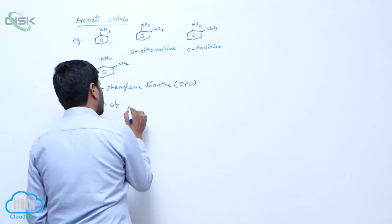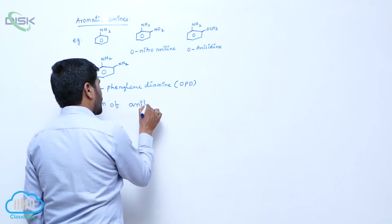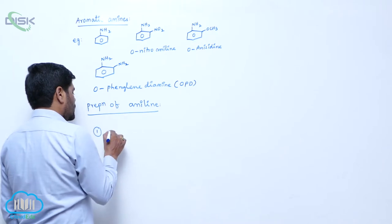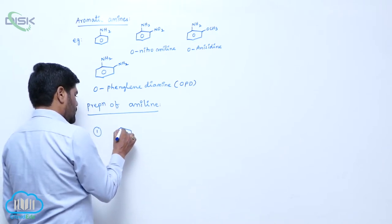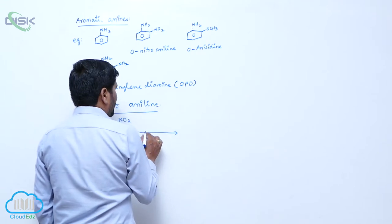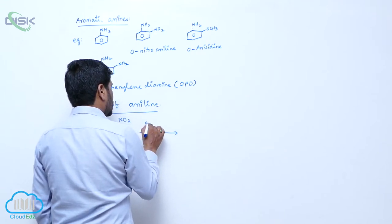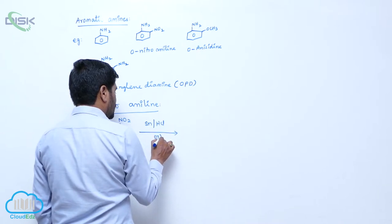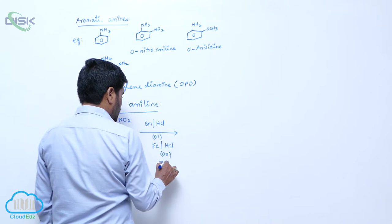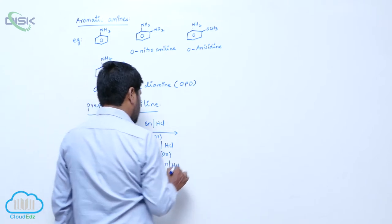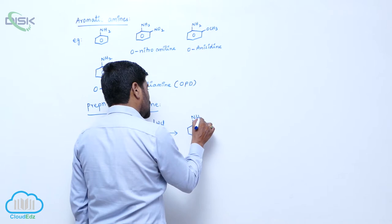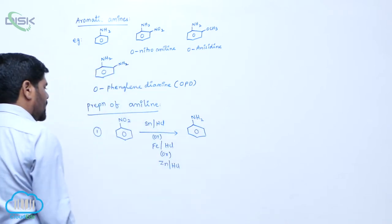Preparation of aniline. Number one: from nitrobenzene. Nitrobenzene is reduced by a metal in the presence of hydrochloric acid — tin, iron, or zinc in the presence of hydrochloric acid. Nitrobenzene converts into aniline.